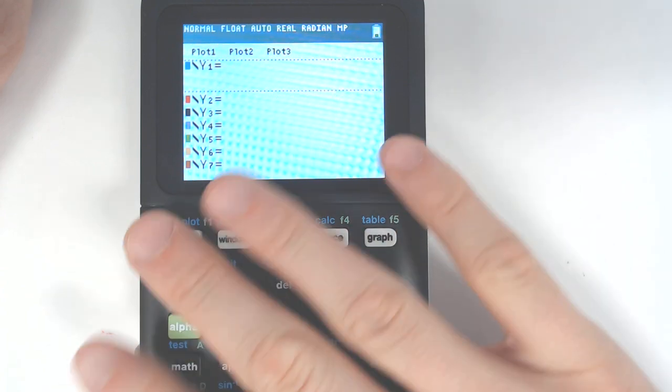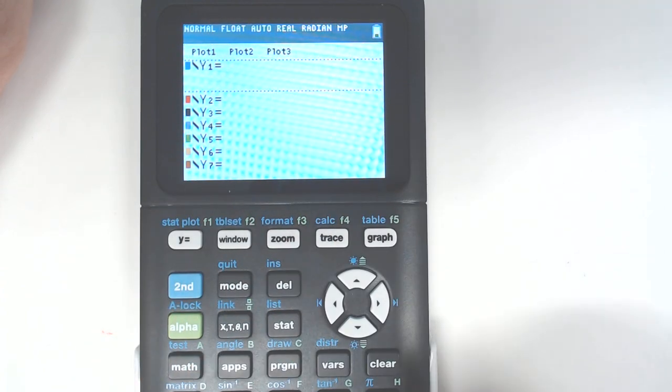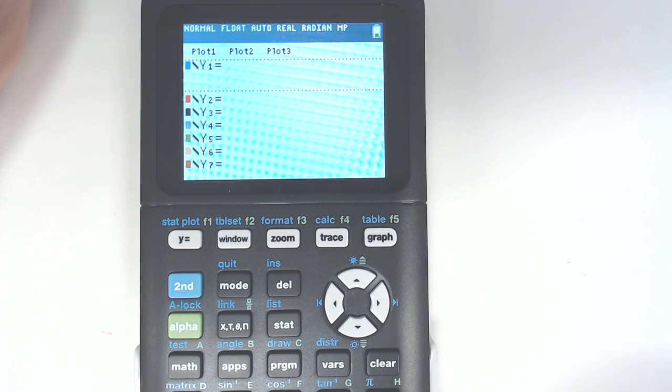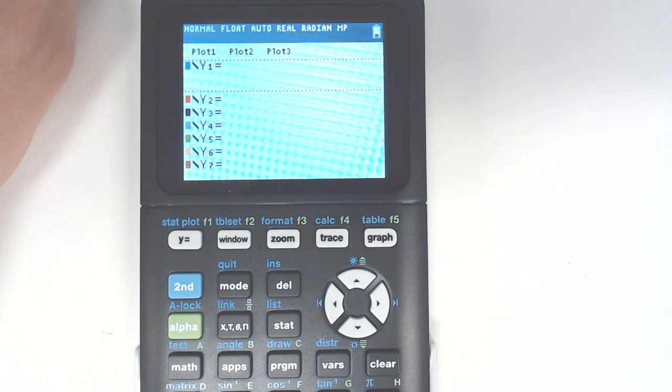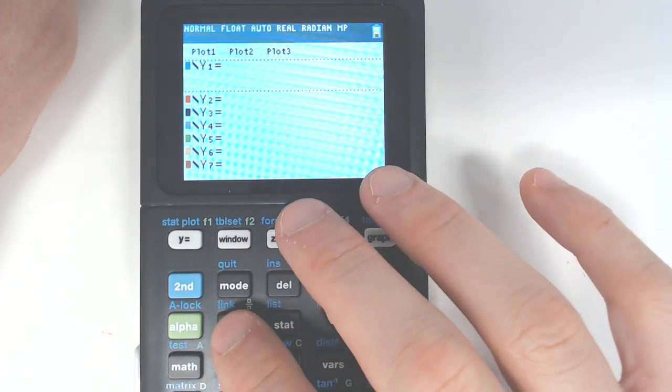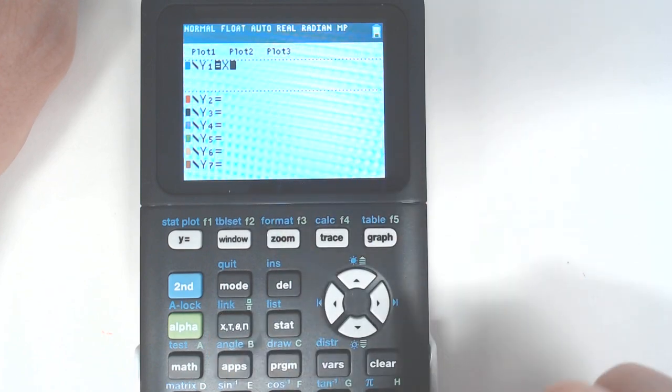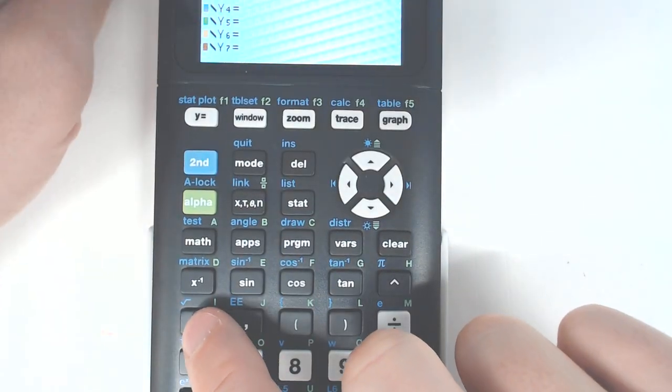You hit Y equals, and then you type in whatever equation you want. It only deals with X equations, but you can pretend like any variable's X. So even if it was A squared, you could type in X, and then squared. This is the squared button right here.